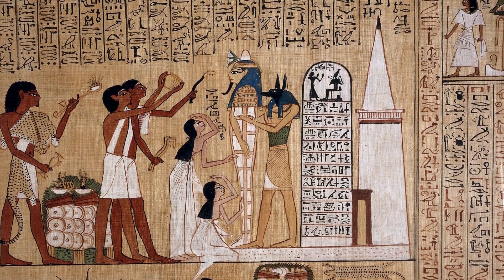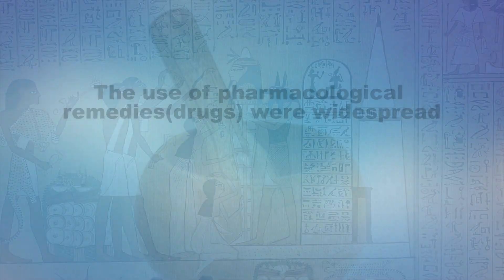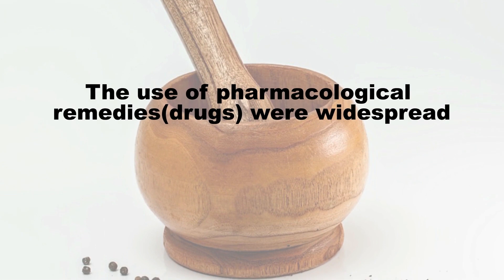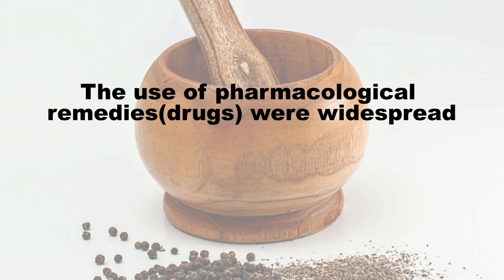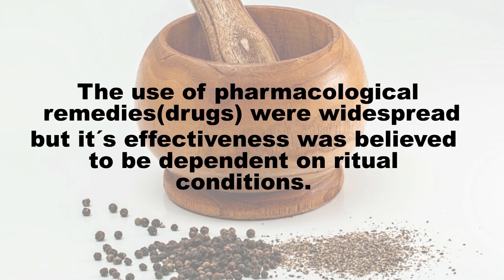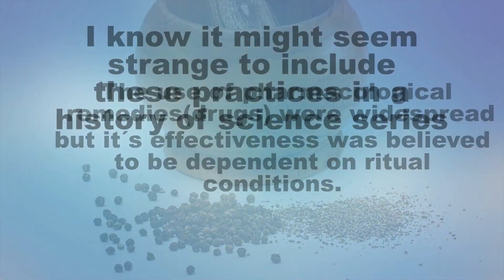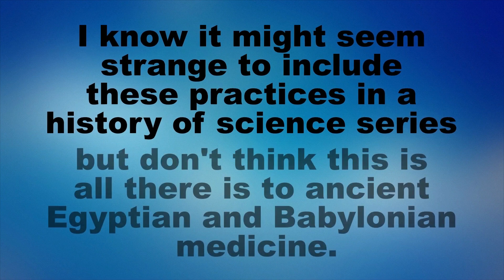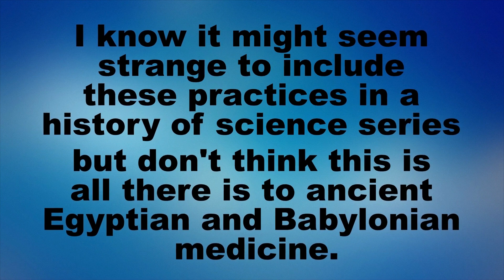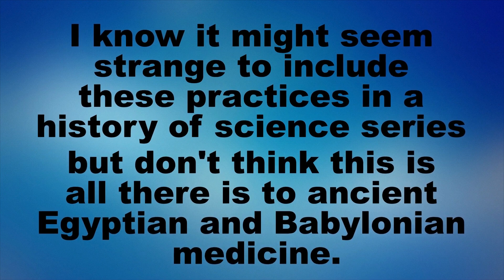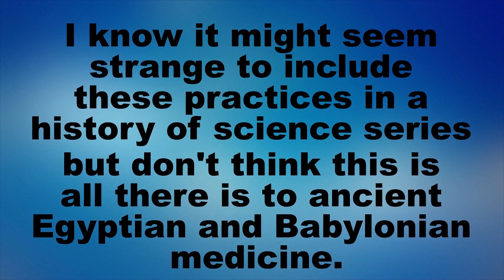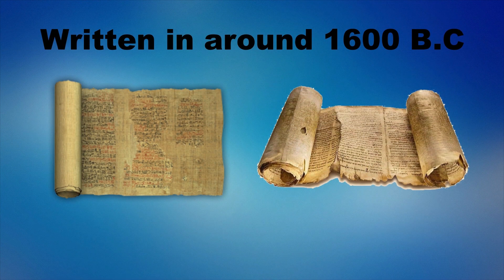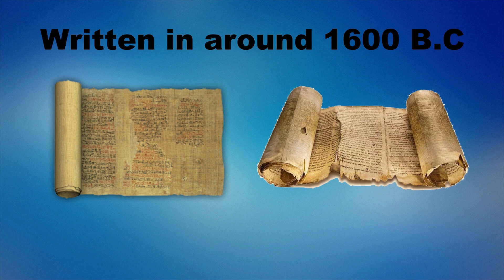Ancient medicine was not limited to prayer and ritual though. The use of pharmacological remedies, which basically is another word for drugs, were widespread in ancient Egypt and Babylonia, though their effectiveness was believed to be dependent upon ritual conditions. I know it might seem strange to include these practices in a history of science series, but don't think that this is all there is to ancient Egyptian and Babylonian medicine. There are two ancient documents of interest here. These documents are the Ebers Papyrus and the Edwin Smith Papyrus, both written in around 1600 BC.